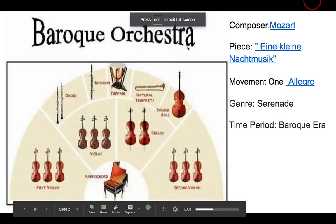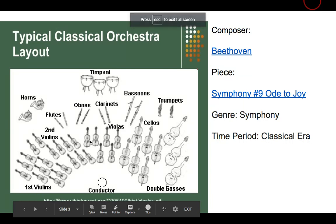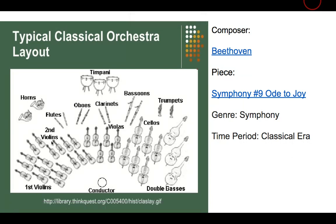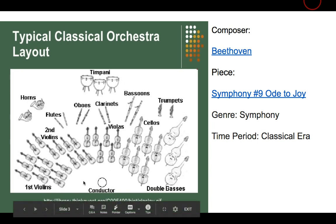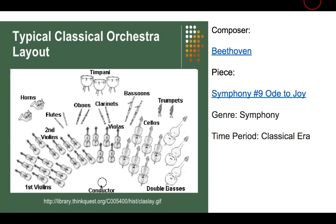We're looking at the classical orchestra and we're going to notice something really important has changed here. Instead of a piano or harpsichord we have a conductor. I want you to think about what the conductor does and think about how that role might have been played by the harpsichord. The conductor is going to lead all the music, whereas in the previous time period that direction was taken from an instrumentalist which was a harpsichord player.